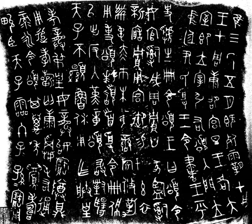As a result, two terms emerged to describe them: the term 'greater seal script' for the more complex, earlier forms, and 'small seal script' for the Qin Dynasty forms. It is only more recently that the term 'greater seal script' has been extended to refer to Western Zhou forms or even oracle bone script, of which the Han Dynasty coiners of this term were unaware.